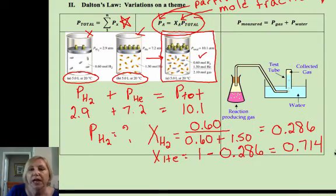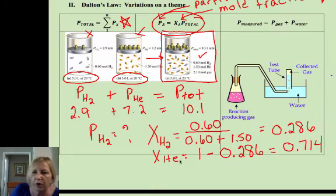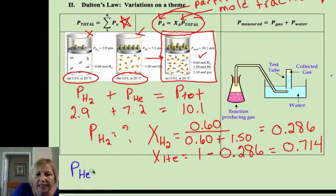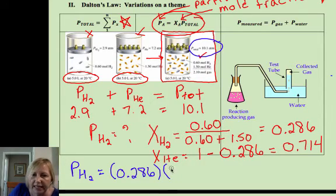So now what if I wanted to know my partial pressure of hydrogen? What we would do next is plug into the formula now that we know the mole fractions. So my partial pressure of hydrogen is going to equal my mole fraction of hydrogen, 0.286, times the total pressure.